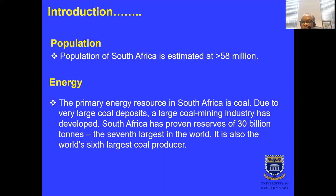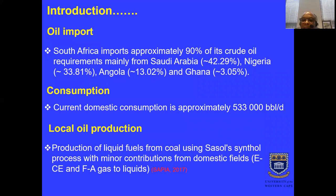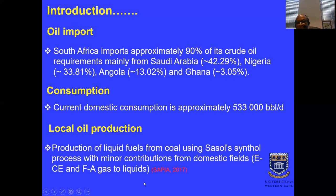Moving from coal to hydrocarbon, South Africa is not doing as well — the bulk of hydrocarbons are imported. South Africa imports approximately 90% of its crude oil requirements, mainly from Saudi Arabia (43%), Nigeria (34%), Angola (13%), and Ghana (3%). Current domestic consumption is about 503,000 barrels per day. Local production comes from liquid fuels from coal using synthetic processes, with minor contributions from domestic fields — the ECE and FA fields, which are part of the Bredasdorp Basin.